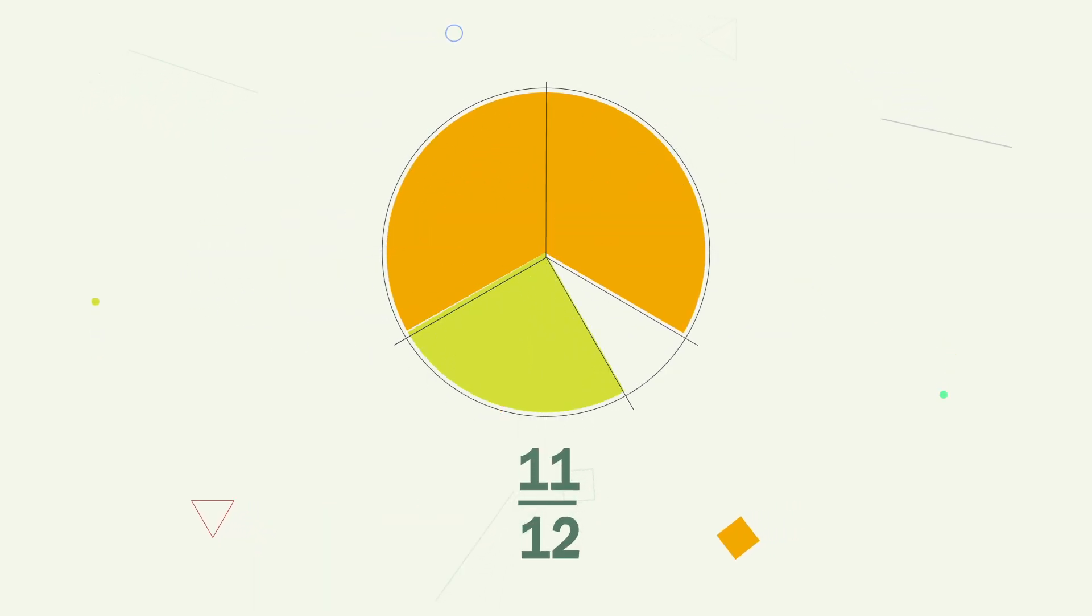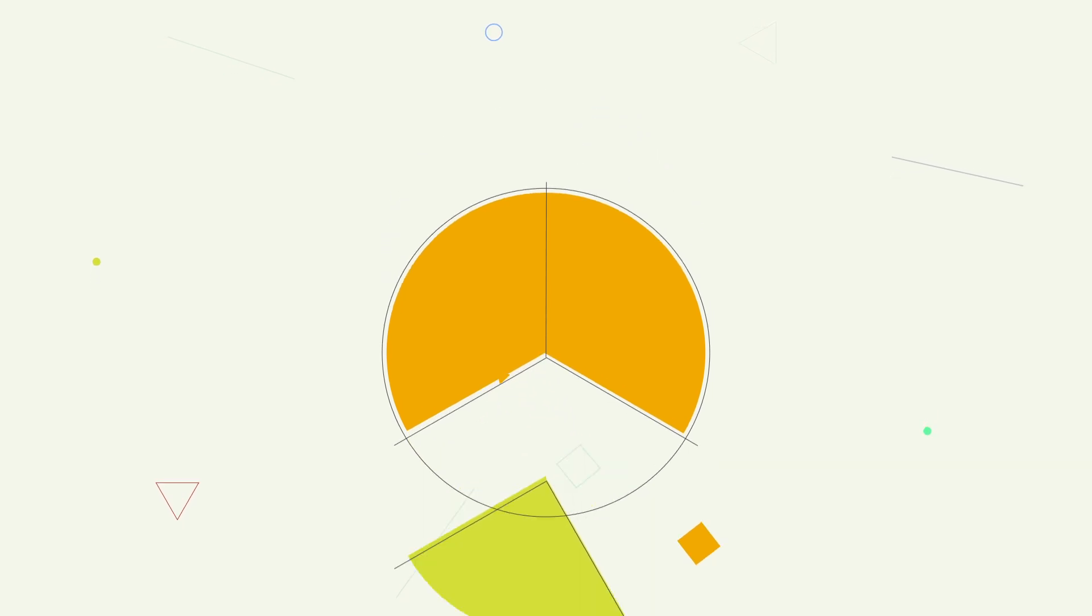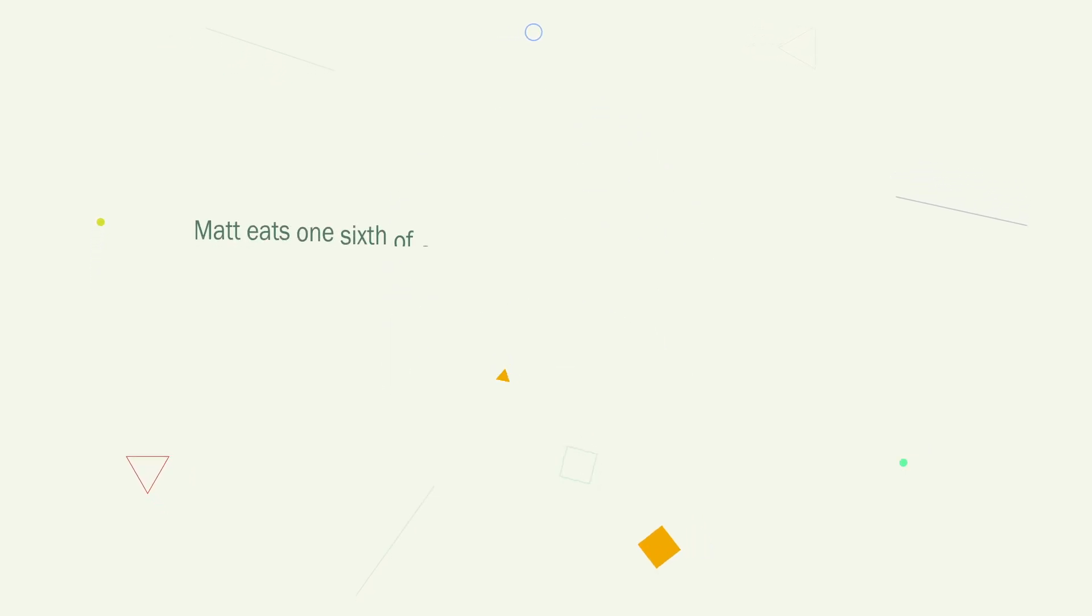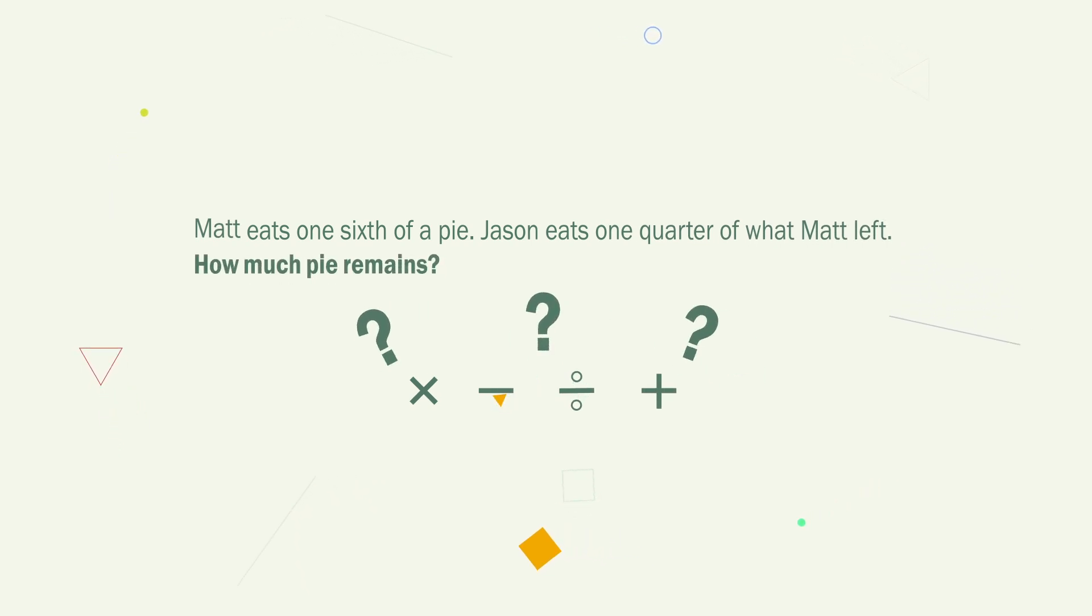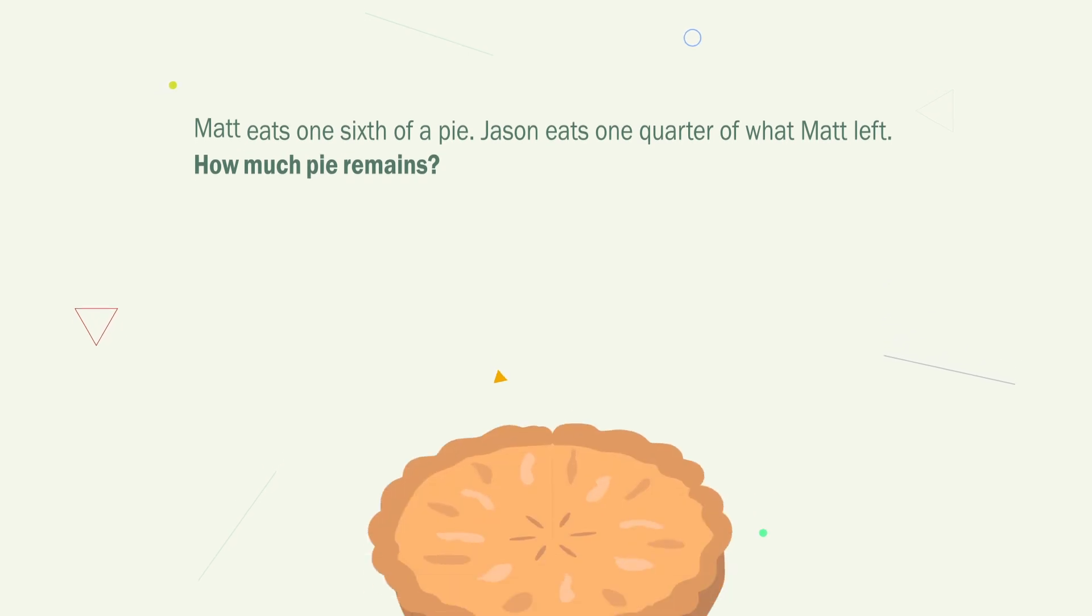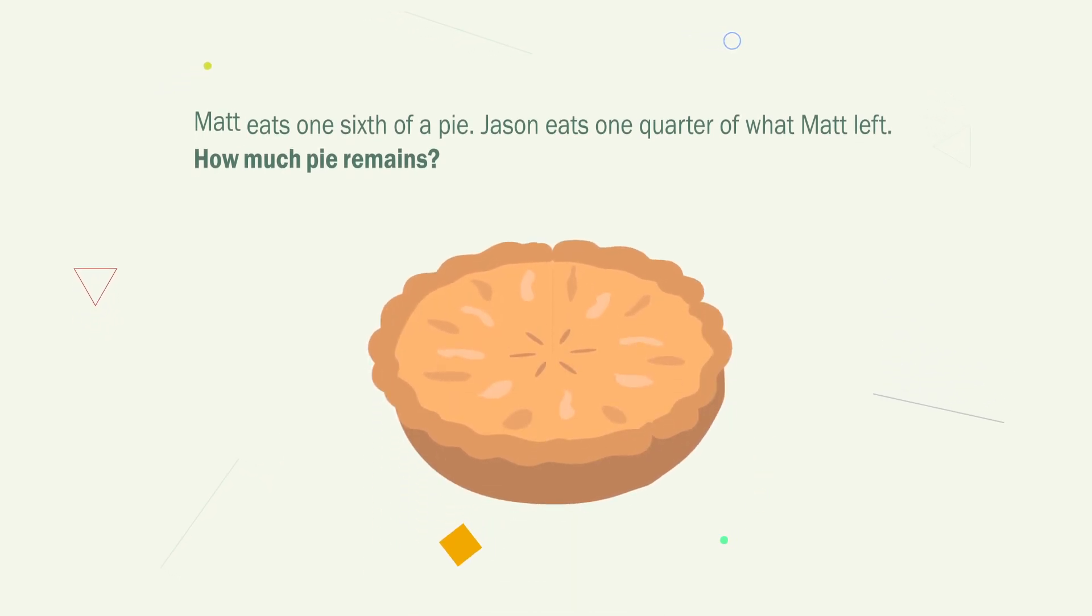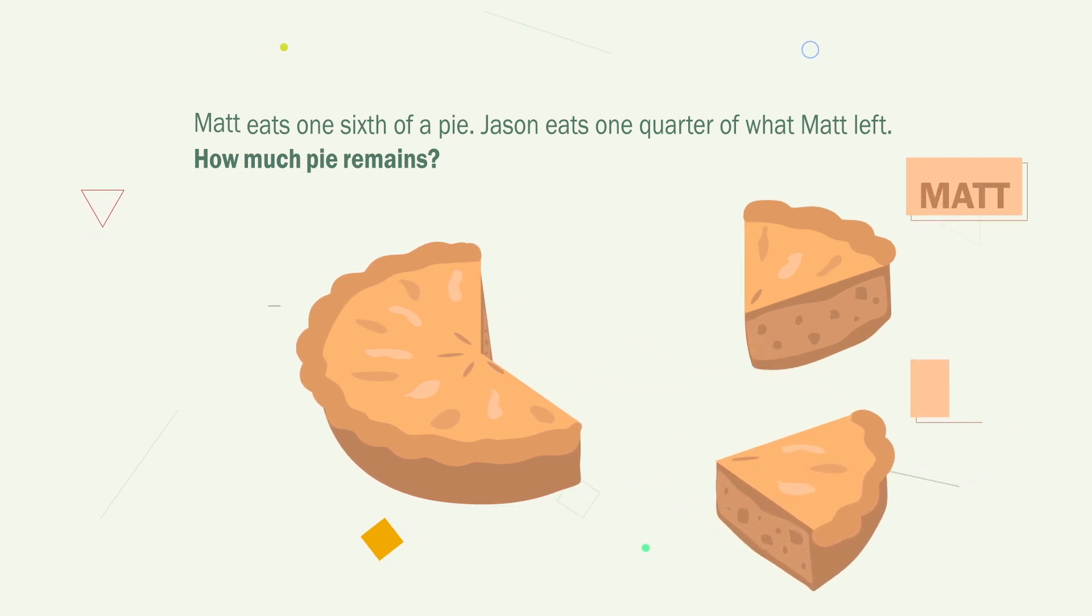Now what about this problem? Matt eats one-sixth of a pie. Jason eats one-quarter of what Matt left. How much pie remains? You can memorize the rules of operations on fractions, but is that enough? How about understanding, visualizing,